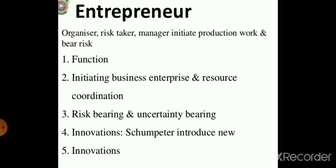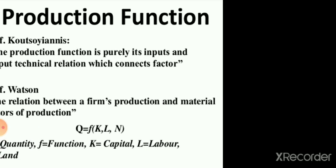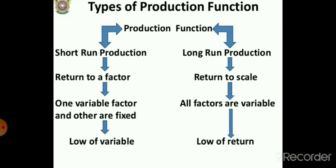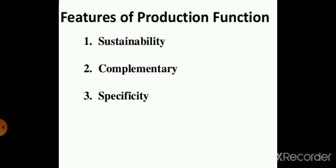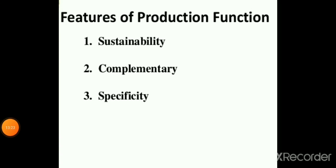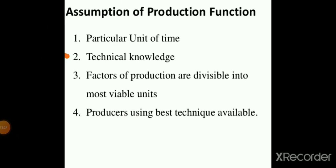The entrepreneur initiates business enterprises, coordinates resources, and drives innovation and innovative thoughts. The production function is Q = f(K, L, N), where K is capital, L is labor, and N is land. Types of production functions include short-run and long-run functions. Features are substitutability, complementarity, and specificity. Assumptions include: particular unit of time, technical knowledge, factors divisible into most variable units, and producers using the best technique available.